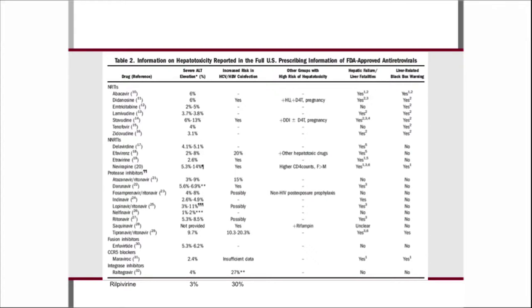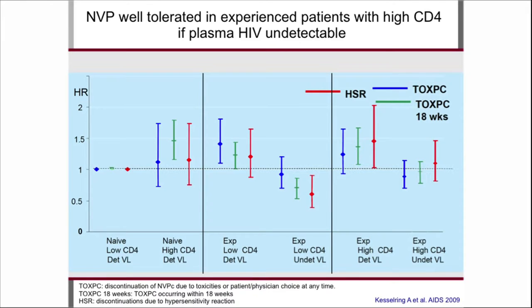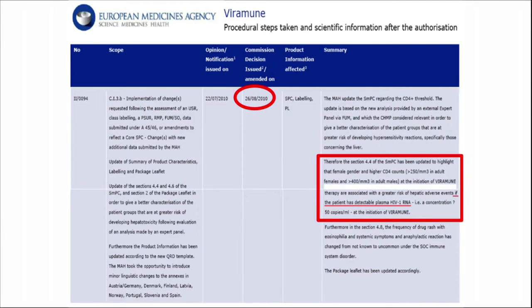Just another word on nevirapine: it can cause liver toxicity and a hypersensitivity reaction, but this is true for patients with high CD4 counts and for patients with detectable HIV viral load. When your patient is suppressed — even with a high CD4 count but undetectable HIV viral load — this risk is no longer present. European recommendations state that women with CD4 above 250 or men with CD4 above 400 should not be started on nevirapine first-line, unless the patient has undetectable plasma HIV viral load, in which case it's safe to use.